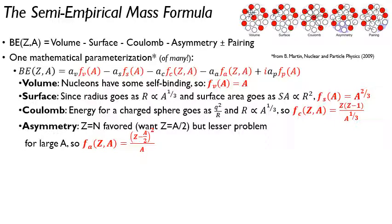For the asymmetry, Z equals to N is favored, so the same number of protons and neutrons. This is because in the strong force, the proton-neutron attraction is slightly stronger than the proton-proton or the neutron-neutron. So this is slightly favored. So you tend to favor proton number is equal to the mass number divided by 2.